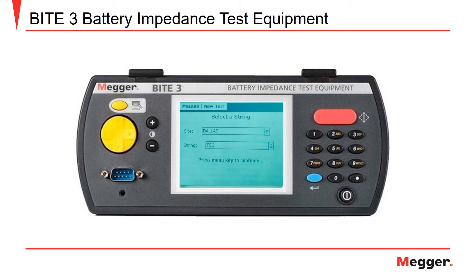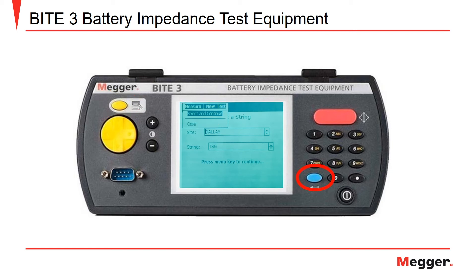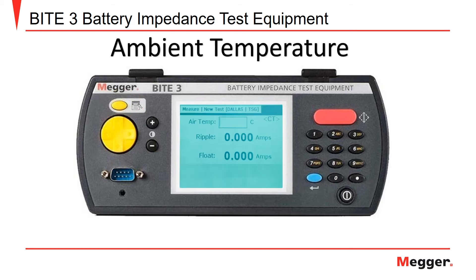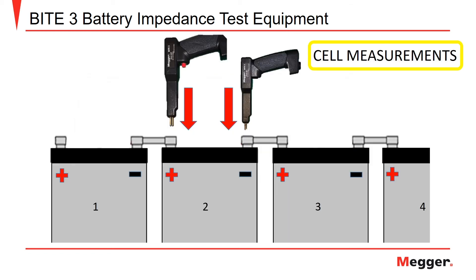Once you have made your selections, press the menu button. Highlight select and continue and press the enter button to proceed. The next screen asks the operator to enter the ambient temperature — enter this value and press the enter button. Following this, you will take ripple and float current measurements. The red test probe will be applied to the positive battery post and the black pistol grip probe applied to the negative post of the same battery to measure both cell impedance and cell voltage.